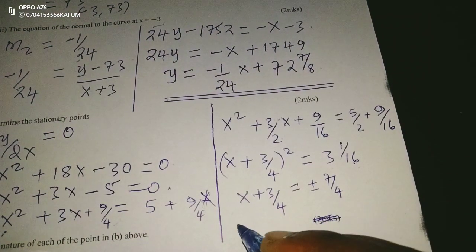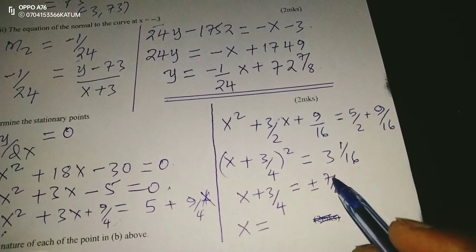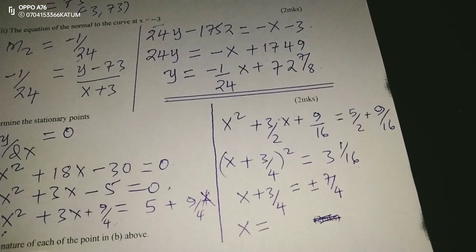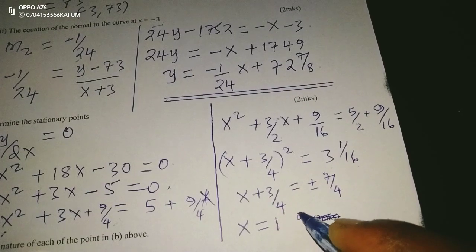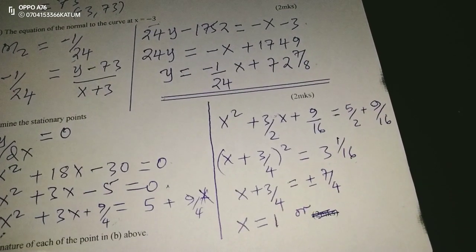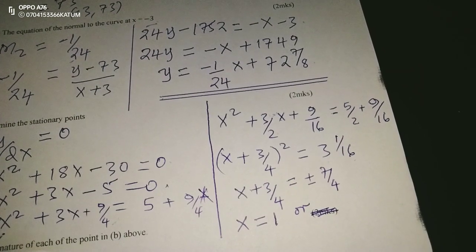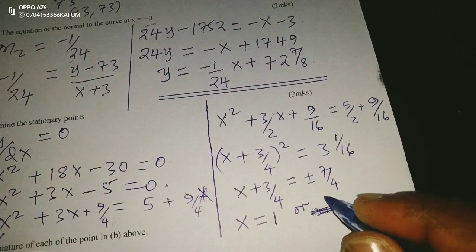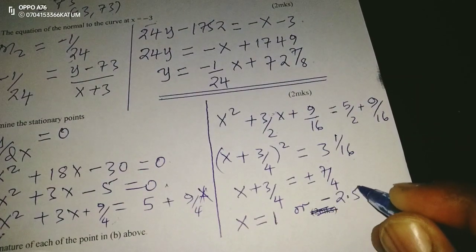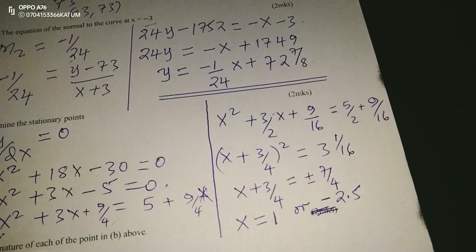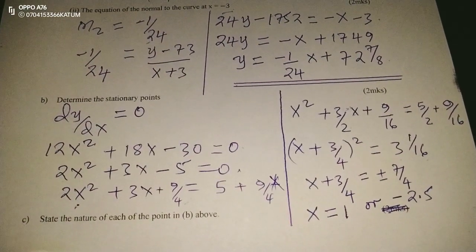From x + 3/4 = ±7/4, we get two values. First: x = 7/4 − 3/4 = 4/4 = 1. Second: x = −7/4 − 3/4 = −10/4 = −2.5. Therefore the two values of x at the stationary points are x = 1 and x = −2.5.